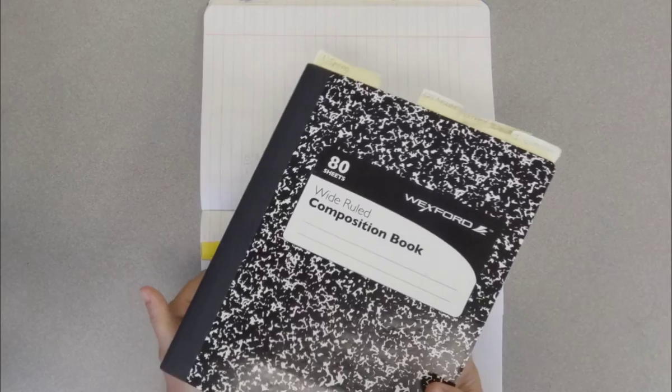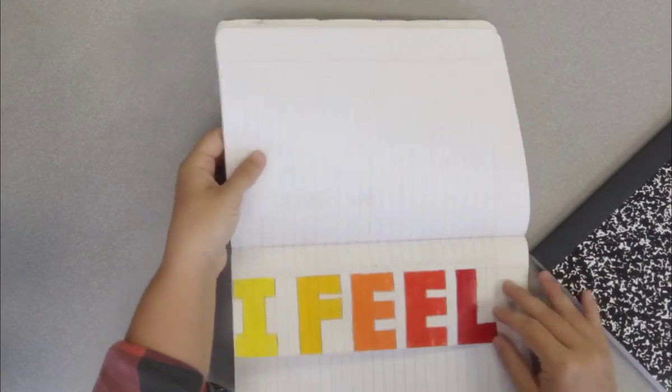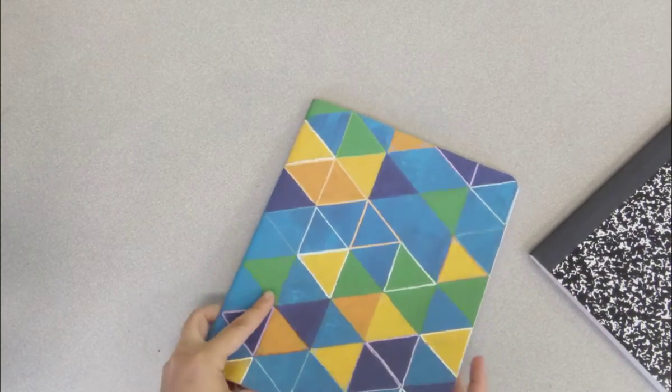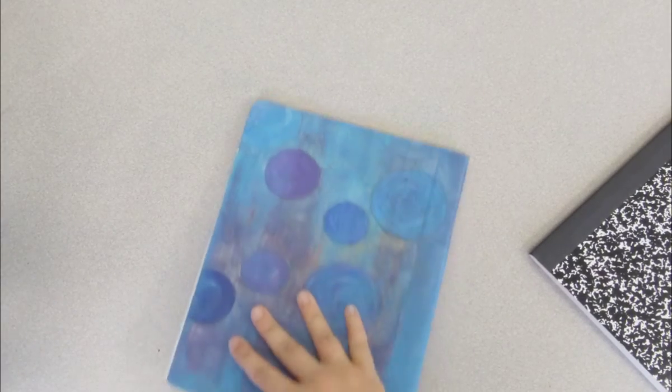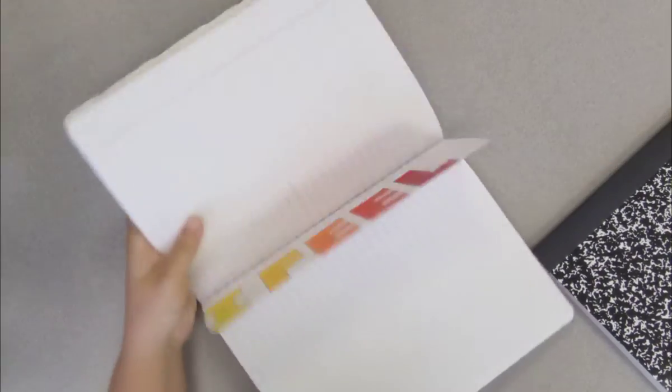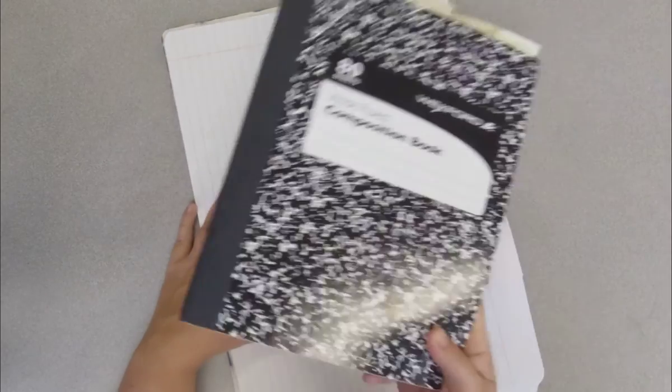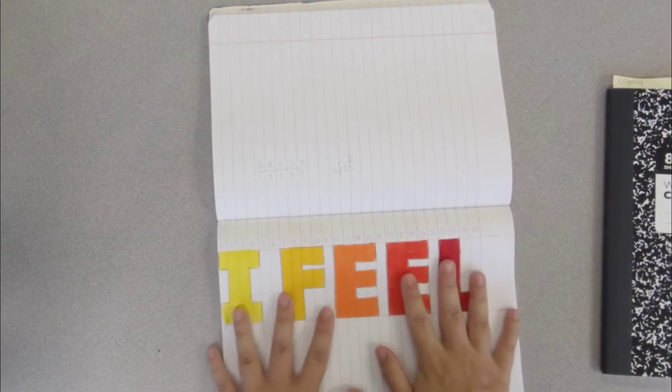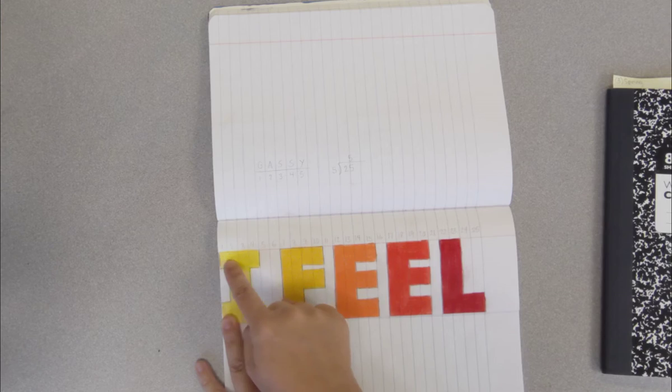I used one of these composition books which I have decorated the outside of. But it's just one of these basic books. The only thing that you need is there to be at least 25 lines on the page.